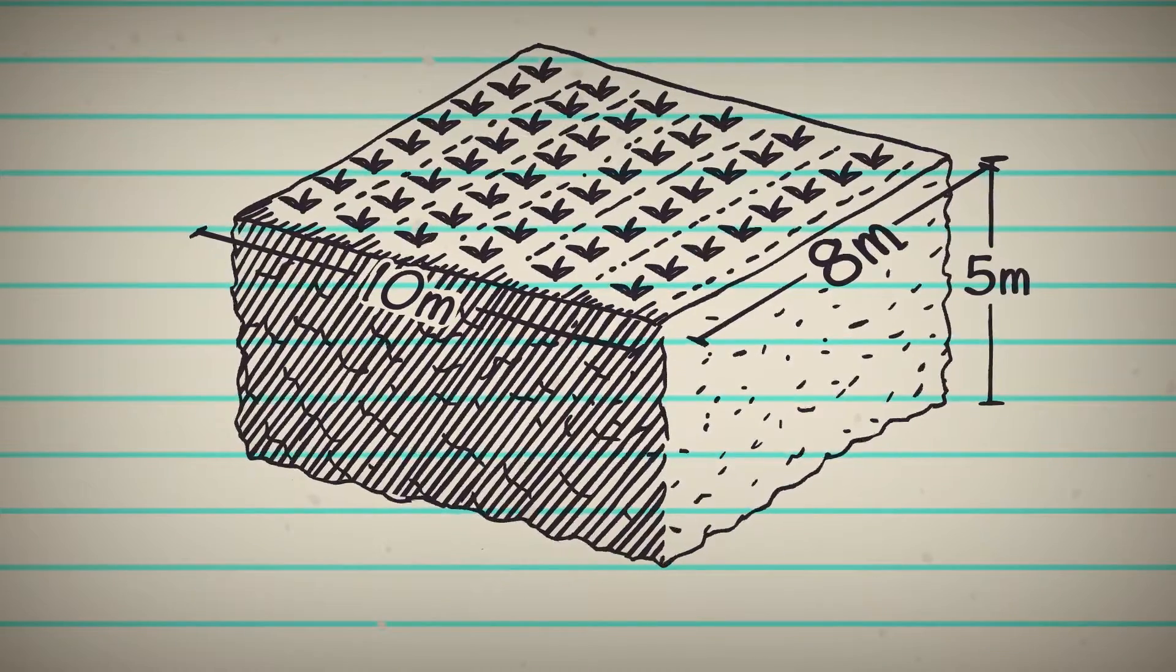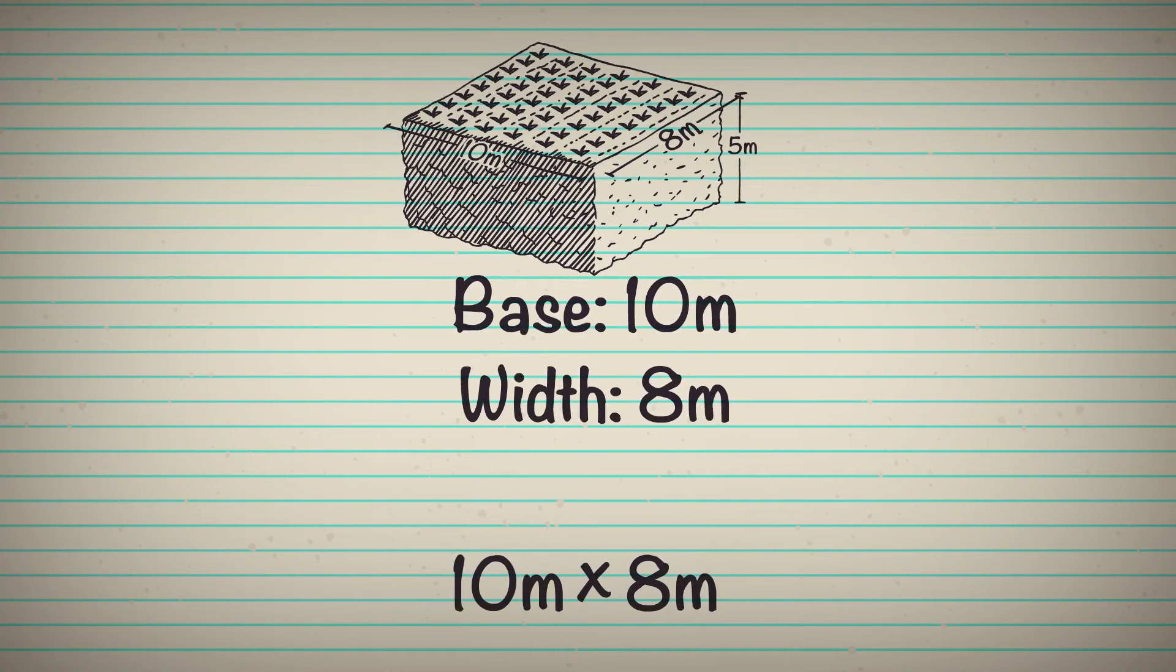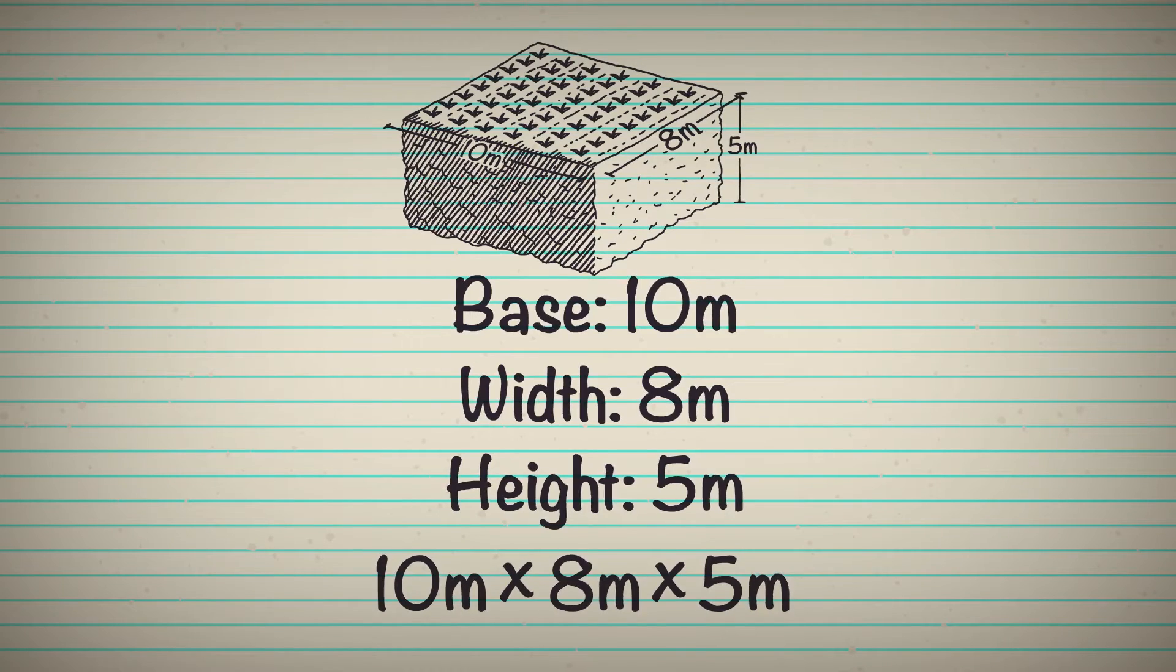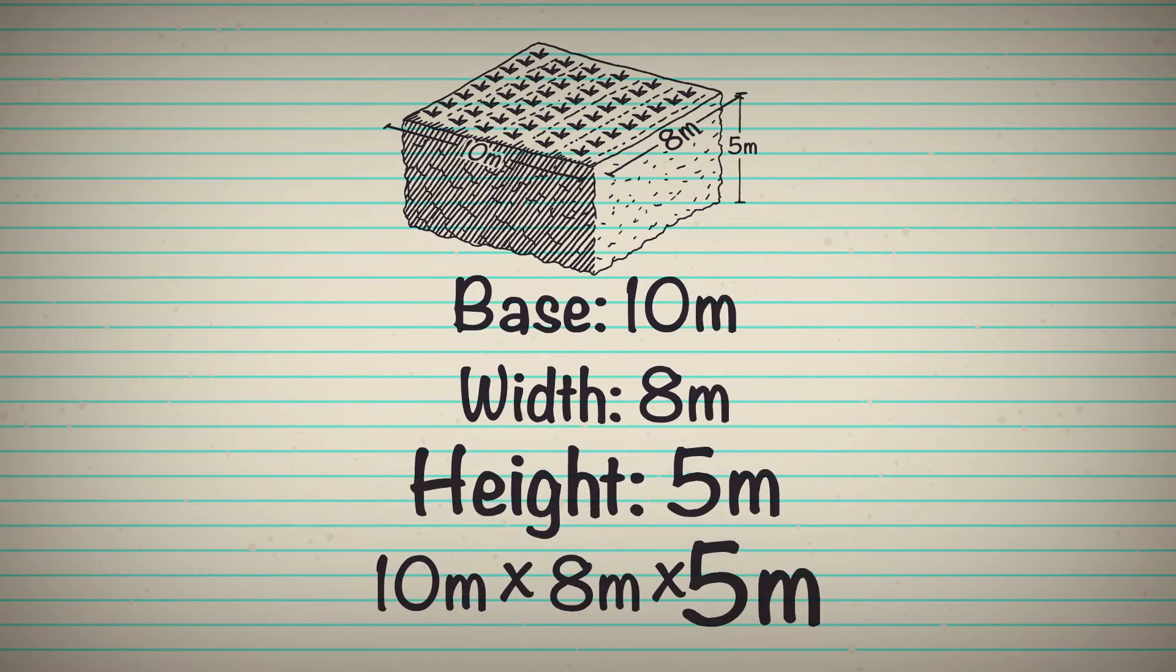We know that our length, also known as the base, is 10 meters, and our width is 8 meters, just like before. And now we see our height is 5 meters. We will lay out this equation: base times width times height. But we are no longer determining the area, since area is a two-dimensional aspect. Instead, we have calculated the volume.